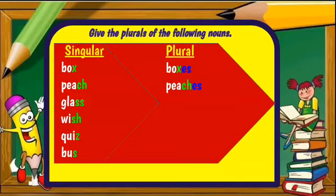Peach, plural peaches because of that ch we also add es. Glass, we add es with glasses plural. One wish to get wishes plural because of that sh we add es.